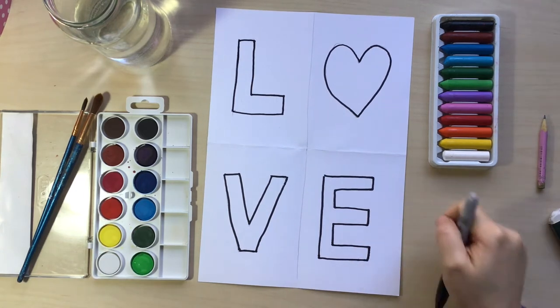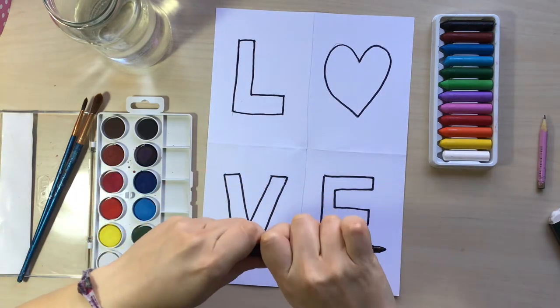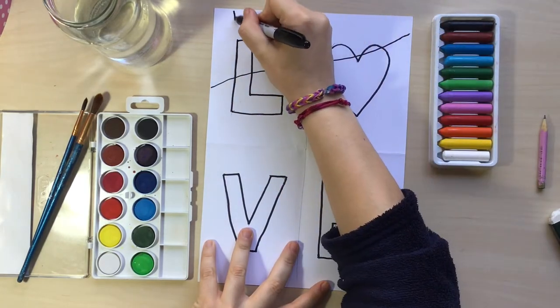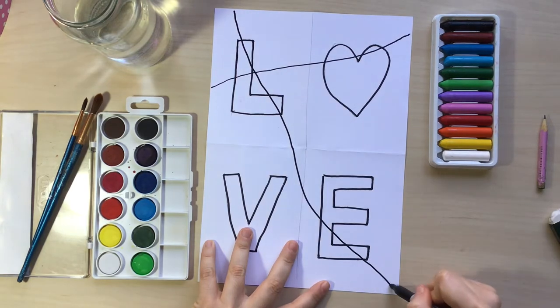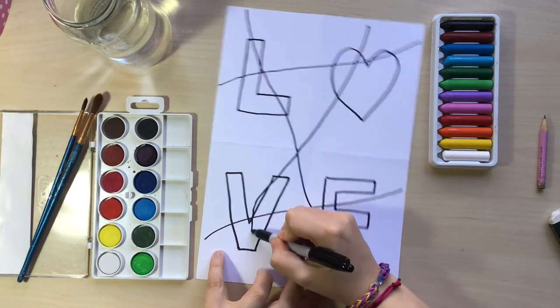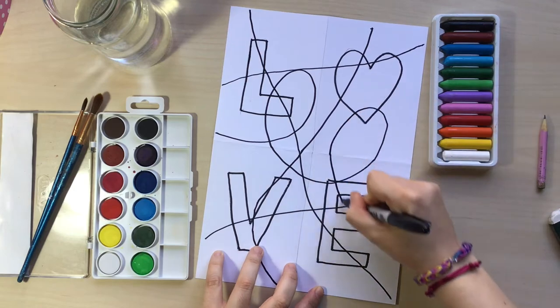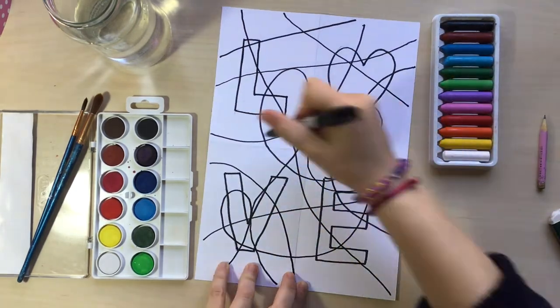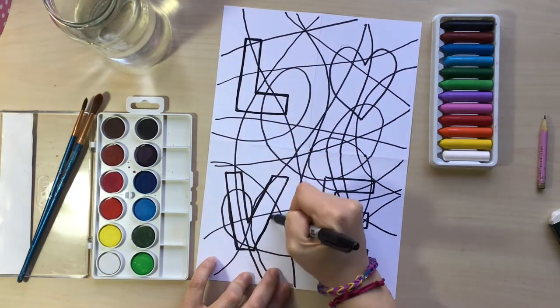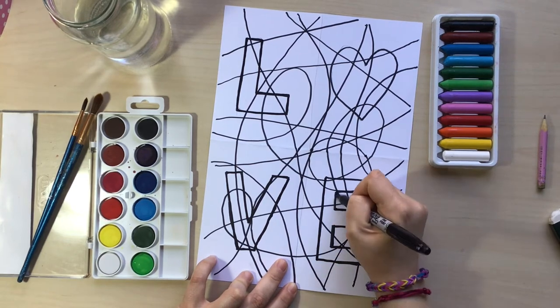And now the fun part starts. What I'm going to do is that I'm going to grab my marker again, and I'm just going to draw several lines around my art piece. They don't have to be perfect, they just have to be random lines that go all over the paper. They can be wavy, they can have loops on them, they just have to go all around. I'm going to go through the letters again, just so they don't fade with all the lines that I just made.